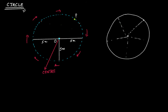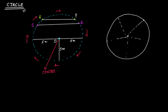Now, suppose this is a point P on the circle and I take another point Q. If I join these two points, I get a line segment. Let me also take another point R and S, and join them — and another point T and U and join them.